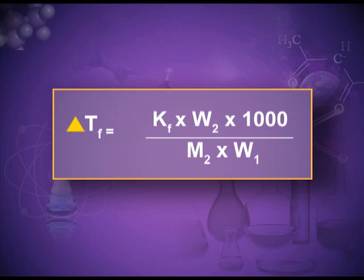Mathematically, ΔTf = Kf × (w₂ × 1000) / (M₂ × w₁). Here ΔTf is inversely related to the molecular mass of solute M₂. Using this formula you can find ΔTf, the molecular mass of solute, or any other expression depending on the numerical. Keep in mind that if temperature is given in degrees Celsius, you must add 273 to convert it to the Kelvin scale.